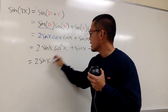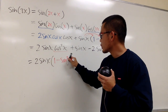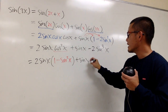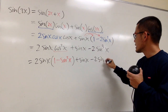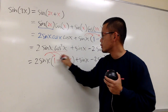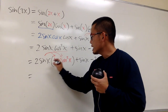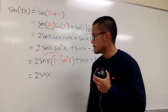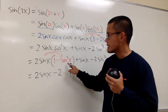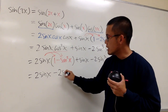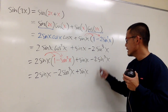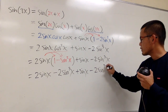This becomes 2 times sine x times the quantity 1 minus sine squared x, and then the remaining terms stay the same: plus sine x, minus 2 sine cubed x. Distributing, we get 2 sine x times 1, which is 2 sine x, and then minus 2 times sine x times sine squared x, which is minus 2 sine cubed x, plus sine x, minus 2 sine cubed x.